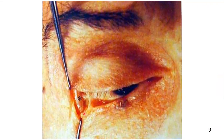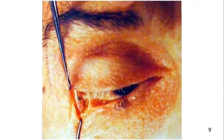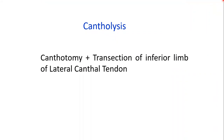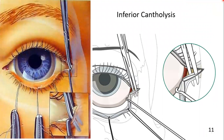Since the inferior limb is attached to the lower tarsus, it will prevent mobilization, and the lower eyelid cannot be freely everted due to the attachment of this inferior limb of the lateral canthal tendon. So we have to cut it. Cutting or transection of the inferior limb of the lateral canthal tendon is called cantholysis. We will proceed for inferior cantholysis. This part of the lateral canthal apparatus which is attached is transected.